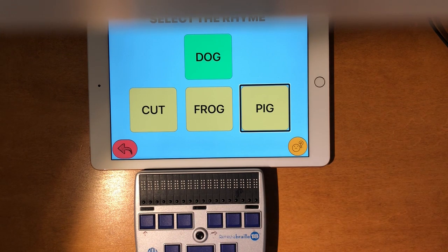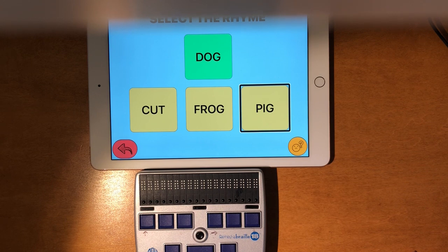Okay. So my answer choice is my word that I want to rhyme with is dog. That's the top word. And then my three answer choices are cut, frog, and pig.